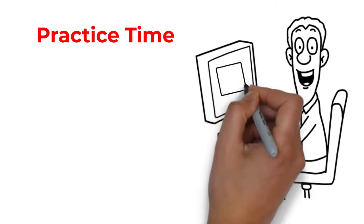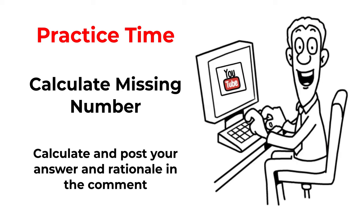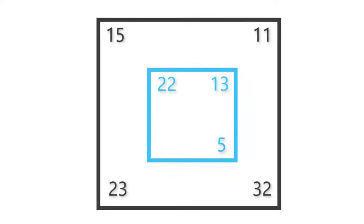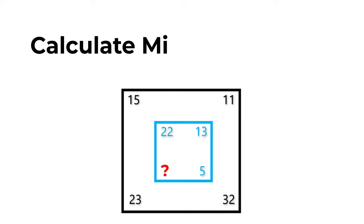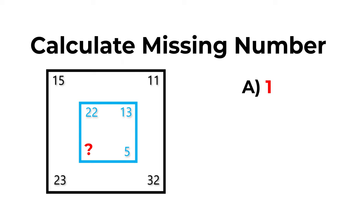Here's a practice question. Two squares are shown — a smaller one inside a larger one. The larger square has corner numbers 15, 11, 32, and 23; the smaller has 22, 13, 5, and one missing number. Choices: A: 1, B: 7, C: 12, D: 17. Can you find the pattern? Post your answer in the comments.